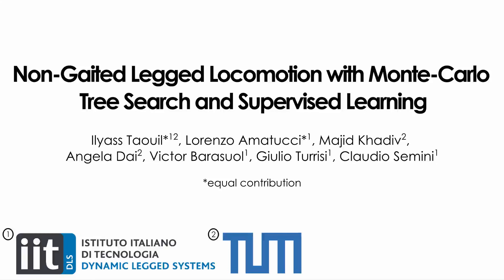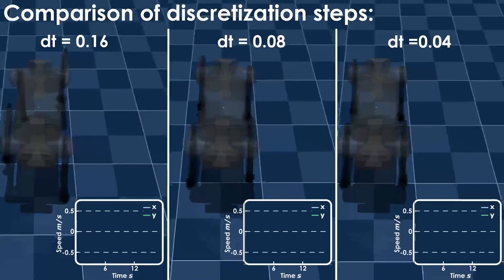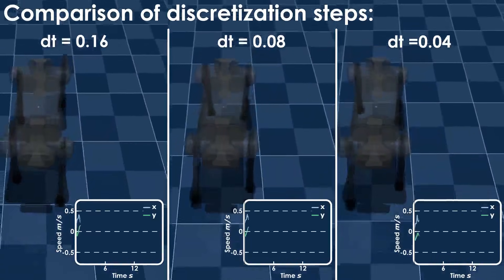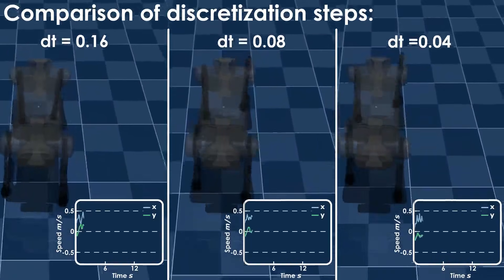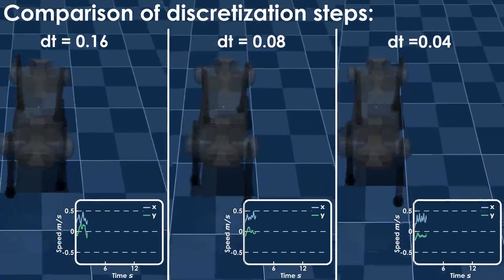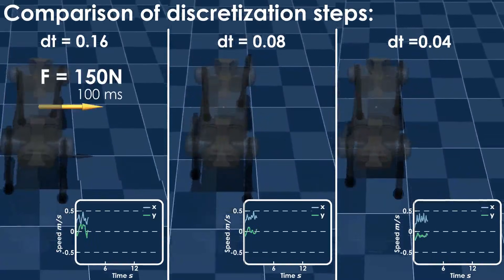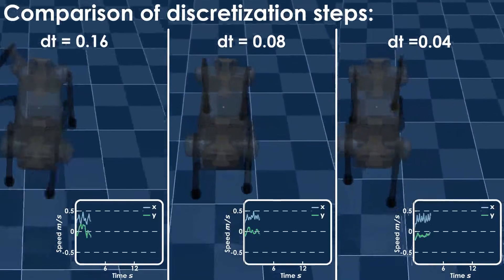We present our work titled Non-Gated Legged Locomotion, with Monte Carlo Tree Search and supervised learning. We analyze the effects of the discretization step of the Monte Carlo rollouts when the robot is pushed by an external force.